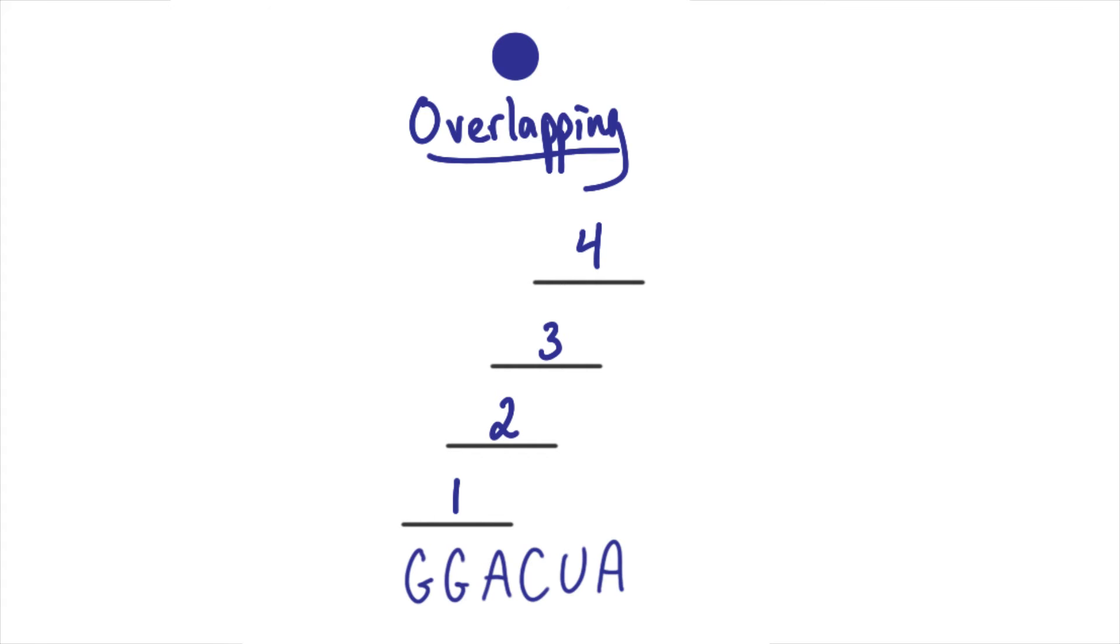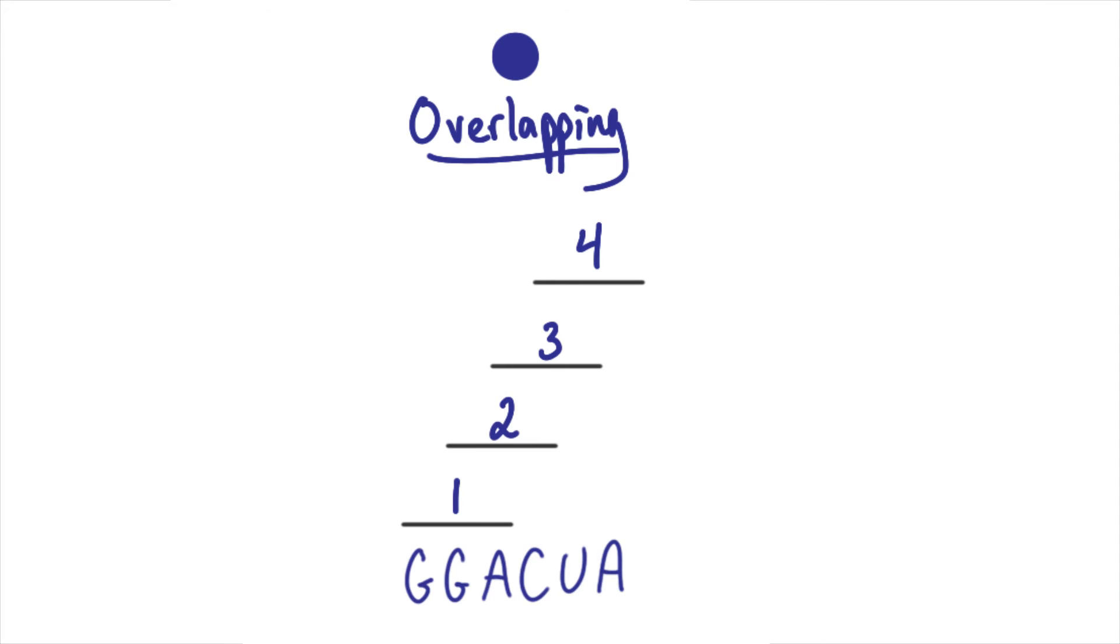This was referred to as the overlapping model because each codon overlapped with another. An alternative model suggested that there was no overlap, and one triplet was read right after another triplet, and so on. So of these models, which one do you think would be the most efficient for information storage?